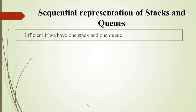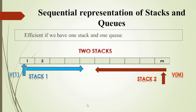In this video, stacks and queues are sequentially represented by the push-pop operations. The sequential representation is efficient if you have only one stack or one queue. If we represent two stacks with M memory locations, one is the first stack and M is the second stack. This stack will grow and this stack will grow. This is also efficient to represent sequentially.